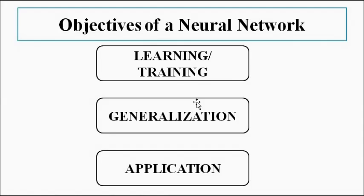Now, what are the objectives of a neural network — why are neural networks used? Its objectives and tasks are the same as the work done by the human brain. The human brain observes, learns, thinks, reasons, draws conclusions, generalizes things, and then applies the acquired knowledge. Those are the same things that an artificial neural network does.